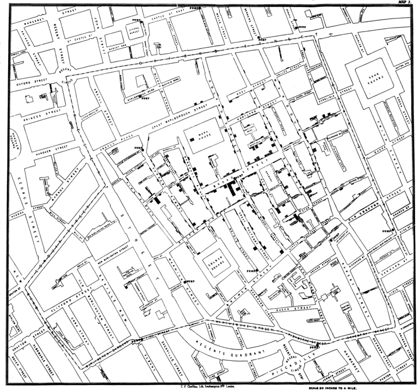Human geography is the branch of geography that deals with the study of people and their communities, cultures, economies, and interactions with the environment by studying their relations with and across space and place. Human geography attends to human patterns of social interaction, as well as spatial level interdependencies, and how they influence or affect the Earth's environment.